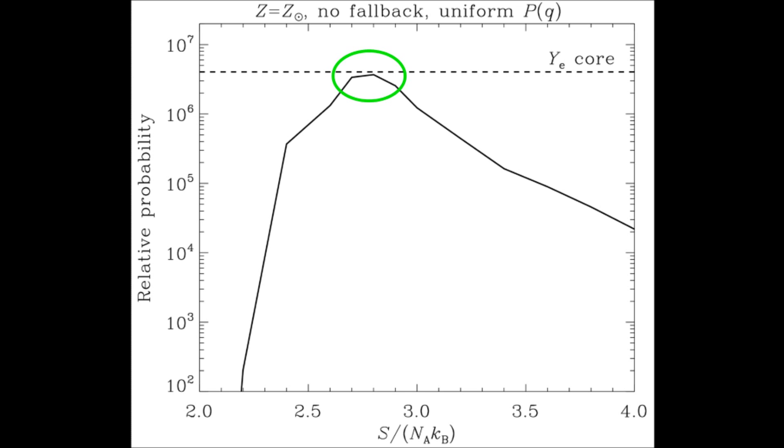For many progenitors, this is the entropy at the edge of the iron core. This then limits the amount of time over which the delayed explosion mechanism can act, to 100 to 300 milliseconds after bounce for most progenitors.